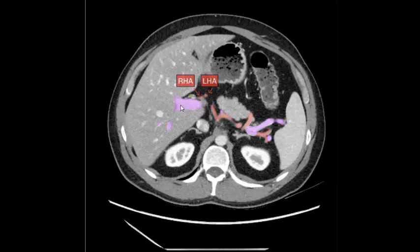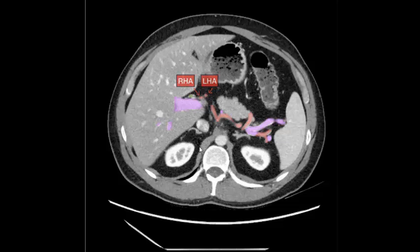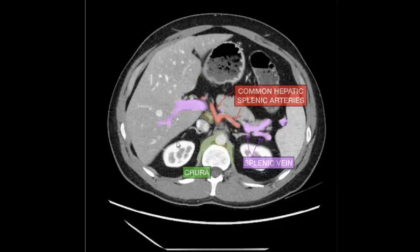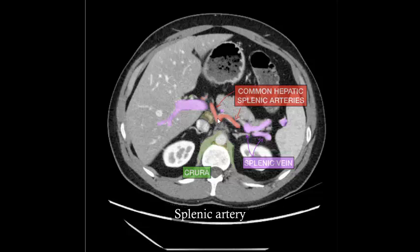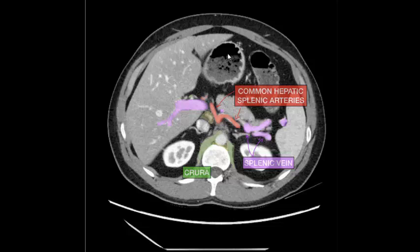Portal vein, right hepatic artery, left hepatic artery, inferior vena cava, splenic artery, splenic vein, right and left kidney, inferior vena cava, abdominal aorta. Transverse colon, stomach, main portal vein, common hepatic artery, splenic artery, splenic vein, crus of diaphragm, right and left kidney, inferior vena cava, abdominal aorta, stomach, transverse colon.